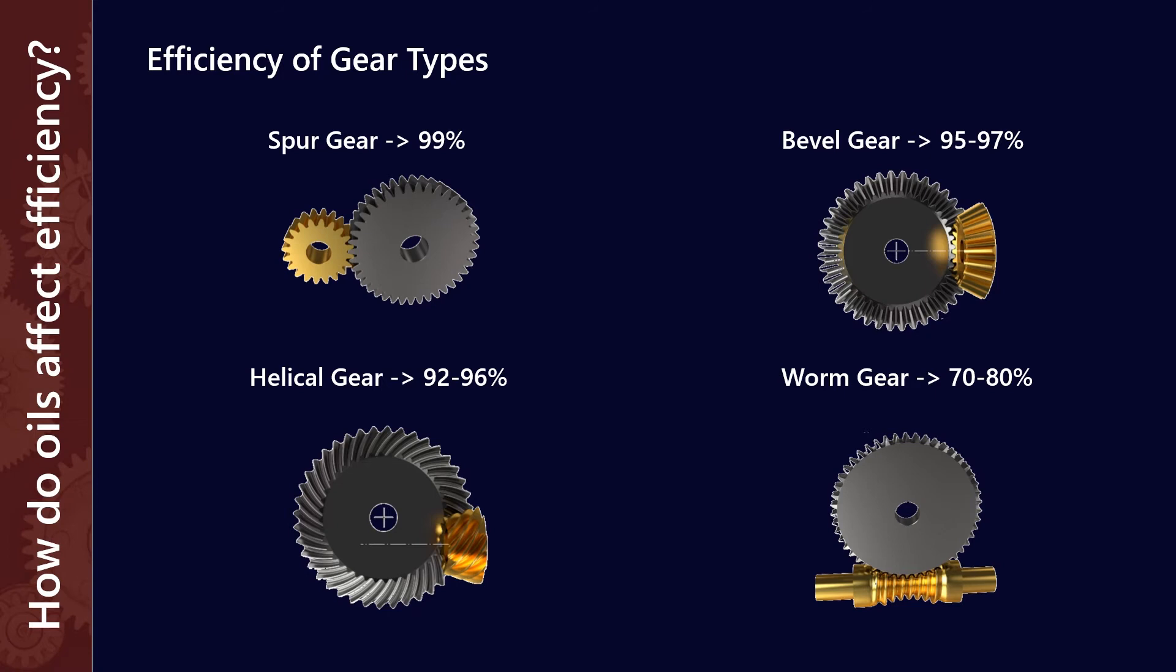Worm gears, on the other hand, are typically 70% to 80% efficient. And this is largely because the sliding contact of a worm gear is much more exaggerated than it is with a spur gear. In a spur, there's really a little bit of sliding, but you think of the pitch line, it's largely a rolling contact.